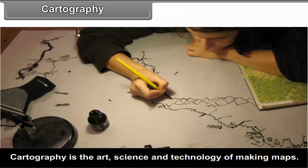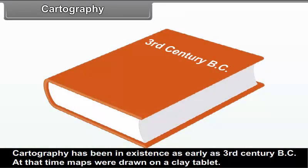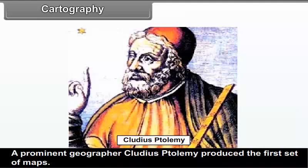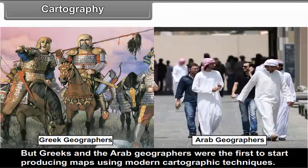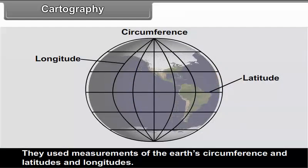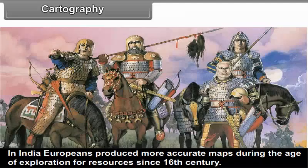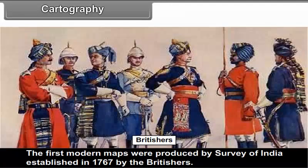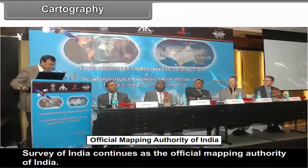9.1 Cartography: Cartography is the art, science and technology of making maps. Cartography has been in existence as early as the 3rd century BC, when maps were drawn on clay tablets. Claudius Ptolemy produced the first set of maps, but Greeks and Arab geographers were the first to use modern cartographic techniques, using measurements of the earth's circumference and latitudes and longitudes. In India, Europeans produced more accurate maps during the age of exploration since the 16th century. The first modern maps were produced by the Survey of India, established in 1767 by the British. Survey of India continues as the official mapping authority of India.